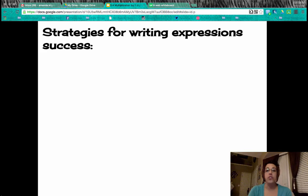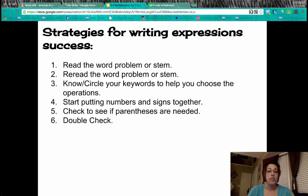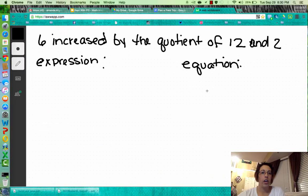So let's look at our strategies for writing expression success. First, you're going to read the word problem or stem that you are given. Reread the word problem or stem. Know and circle your keywords to help you choose the operation. And then start putting numbers and signs together. Check to see if you need parentheses. And then double check, of course, again. So let's look at some of those keywords in these expressions. Okay, so let's look at a few practice problems here.